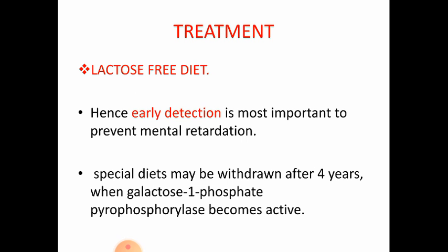Treatment for galactosemia involves a lactose-free diet — milk should be avoided since lactose is present in milk. Early detection is important to prevent mental retardation, as it is not reversible. Special diets may be withdrawn after four years when galactose-1-phosphate uridyl transferase becomes active, and a normal diet can then be introduced.